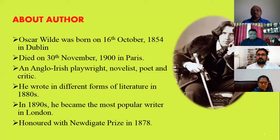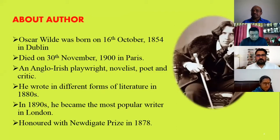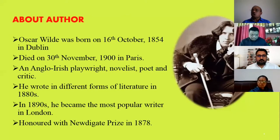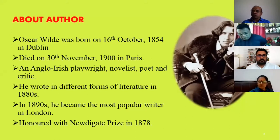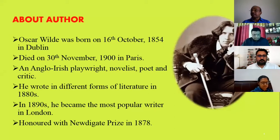Now, the biographical sketch of Oscar Wilde. Oscar Wilde was born on 16th October 1854 in Dublin. He died on 13th November 1900 in Paris. He was an Anglo-Irish poet, novelist, and critic who wrote in different forms or genres of literature in the 1880s. In the 1890s, he became the most popular writer in London. He was honored with the Newdigate Prize in 1878, which is equal to the Nobel Prize.